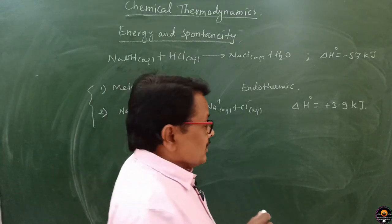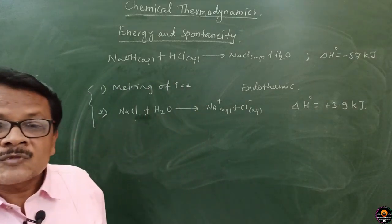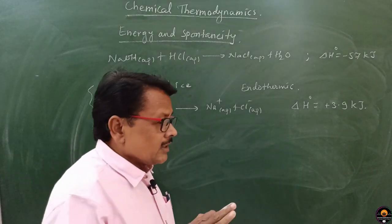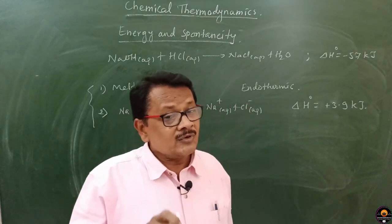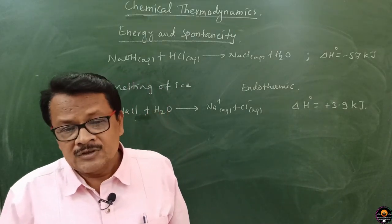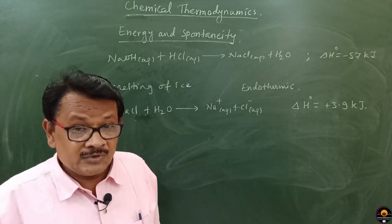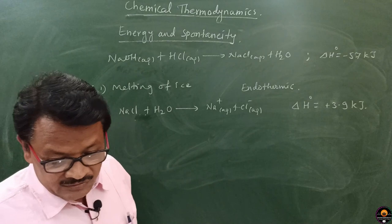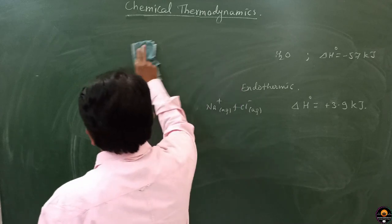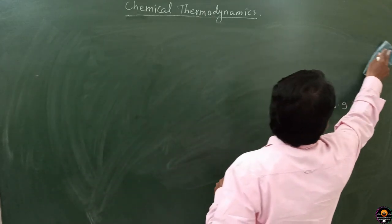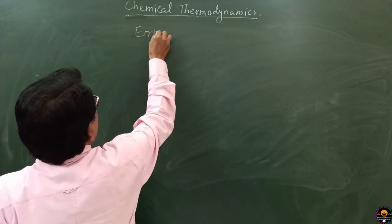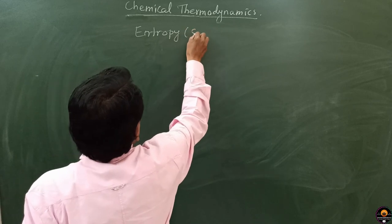Therefore, we cannot say that a spontaneous process is always exothermic or always endothermic. We require a certain other term to explain spontaneity — exothermicity alone is not a criterion for a spontaneous process. That term is called entropy, denoted by S.